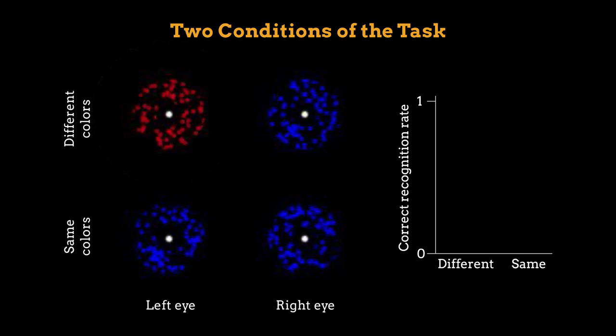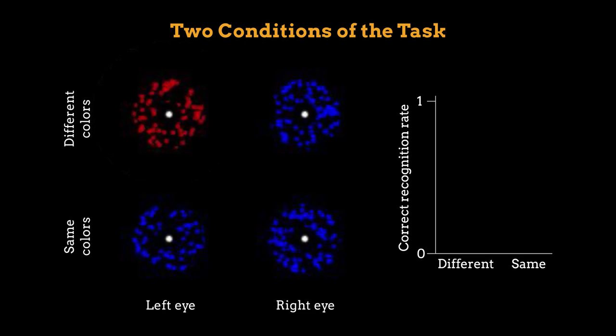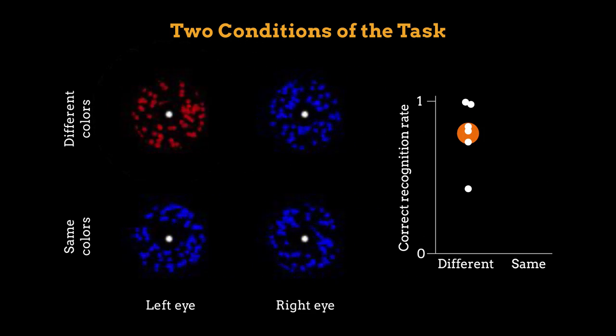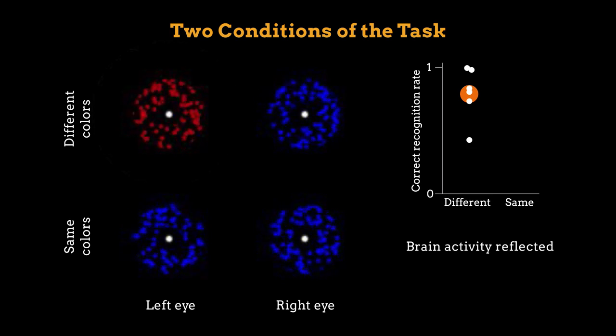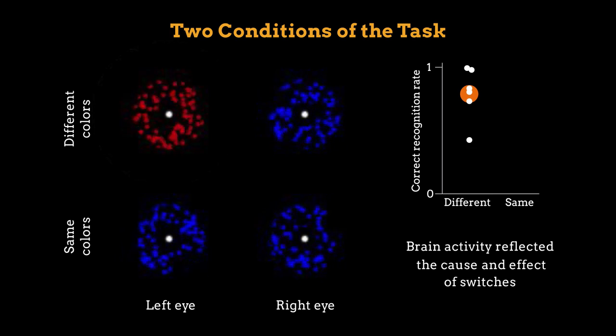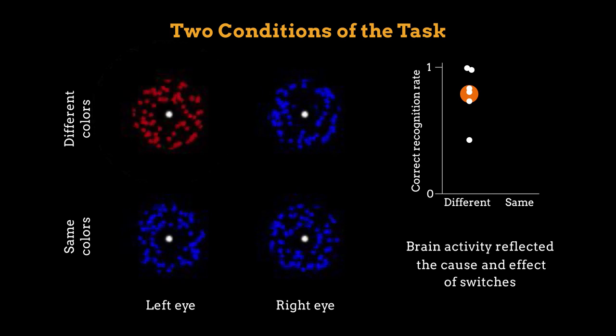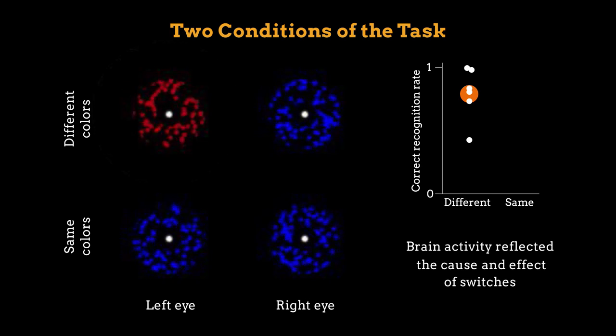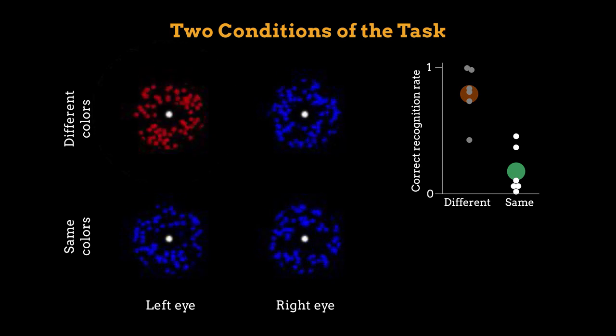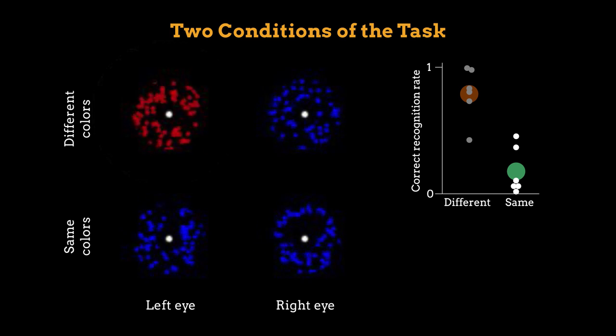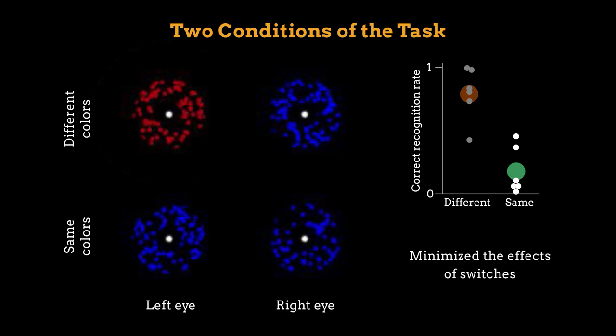Participants easily recognized perceptual switches in the different color condition, which meant that brain activity in this condition reflected both the cause and effect of switches. But they were much less likely to recognize switches in the same color condition, demonstrating that this condition successfully minimized the effects of switches.